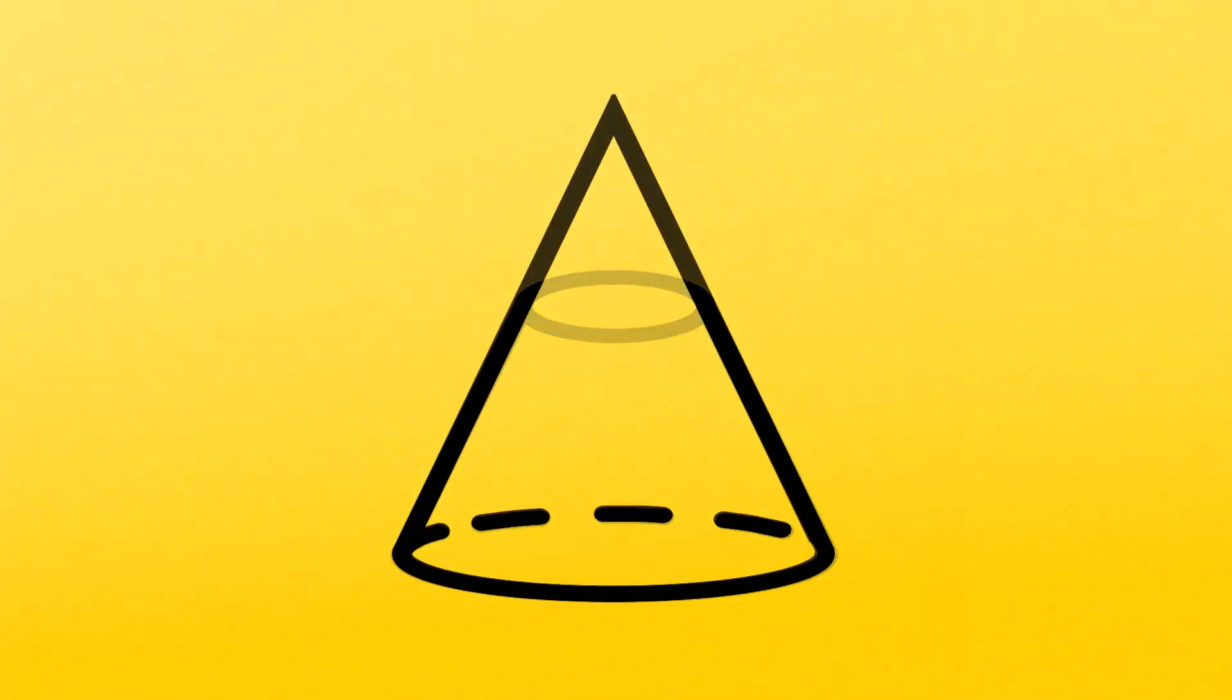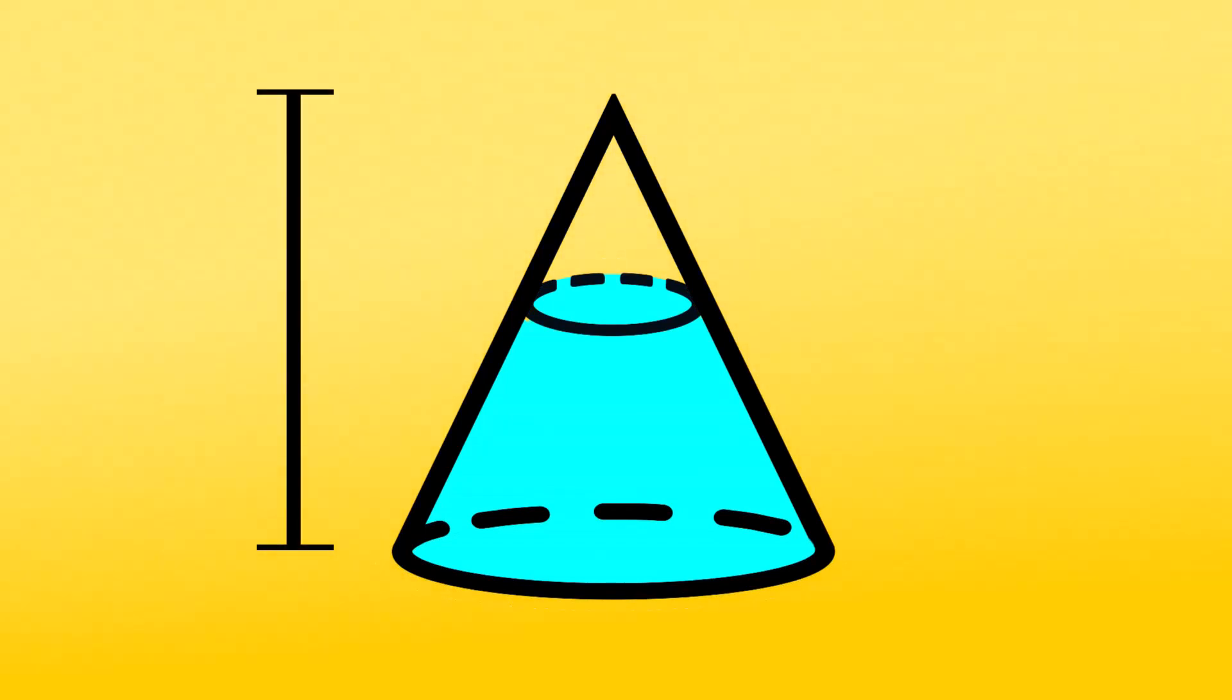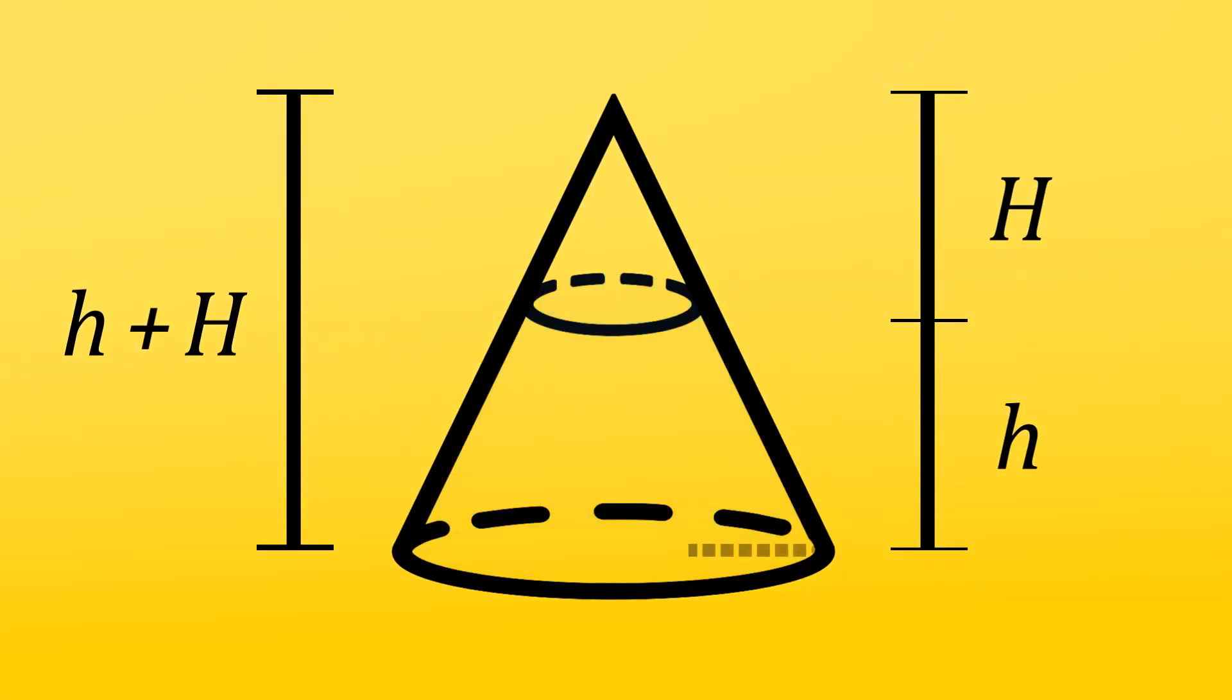To start, consider a cone that has been made into a frustum. Notice how the overall height of the cone is made up of the frustum's vertical height and the height of the smaller truncated portion, denoted as lower and uppercase h. Similarly, the larger base has a radius of lowercase r, while the smaller circular base has a radius of capital R.